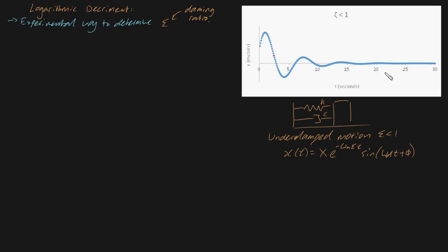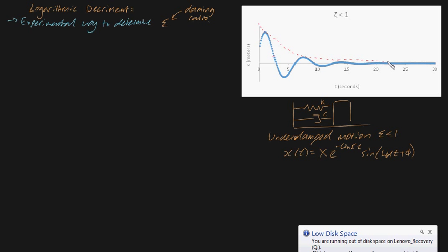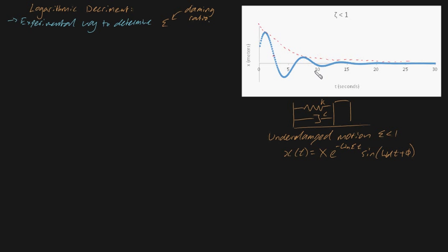Now let me bring your attention to this graph. This is something I plotted on Excel — basically one particular example of an underdamped motion case. The specific values aren't important, but the general shape of this curve is very important. Notice that it oscillates back and forth; it's a sine wave essentially, but its amplitude decreases exponentially. If you connect all the dots of the maximum displacements from equilibrium, this red dotted line would be equal to an exponential, which you can also see mathematically since the coefficient of the sine wave is in fact an exponential.